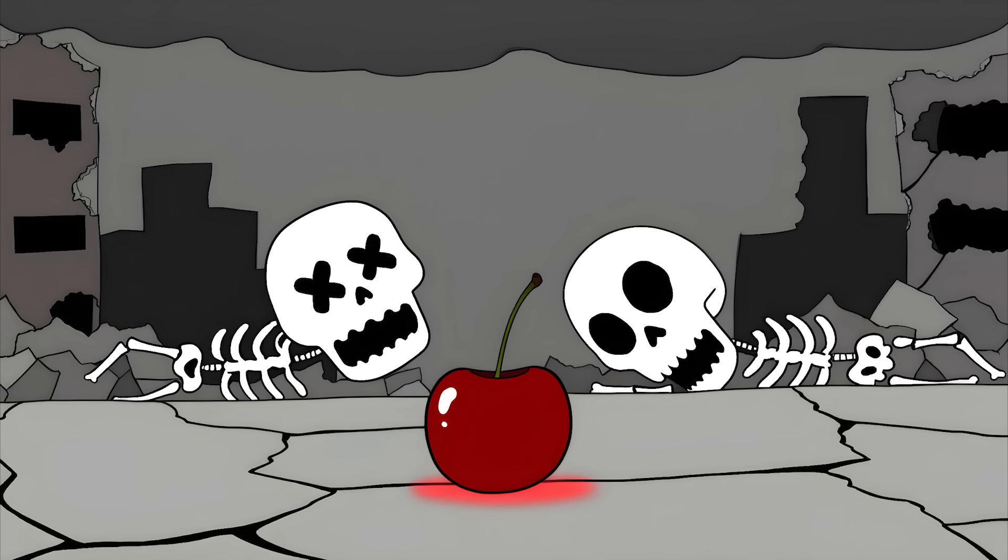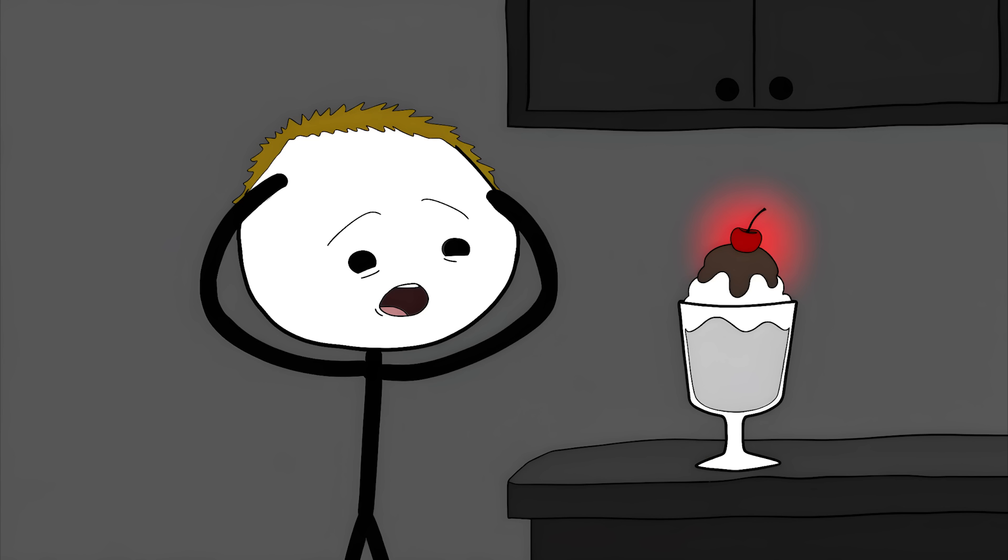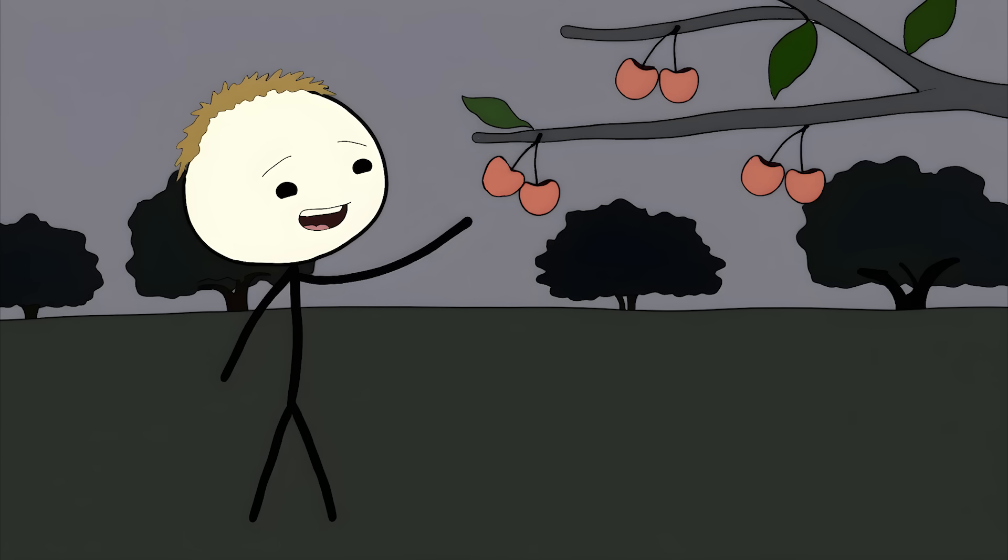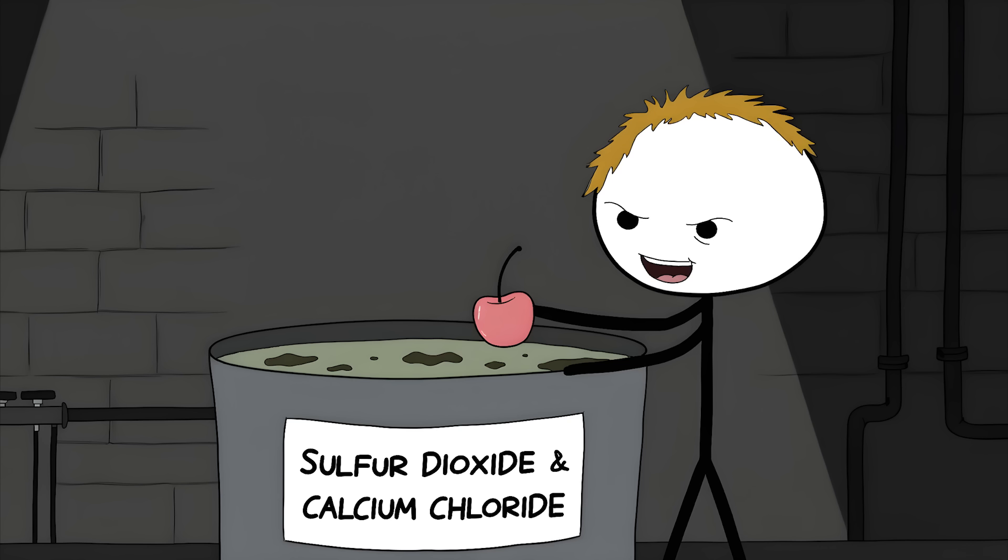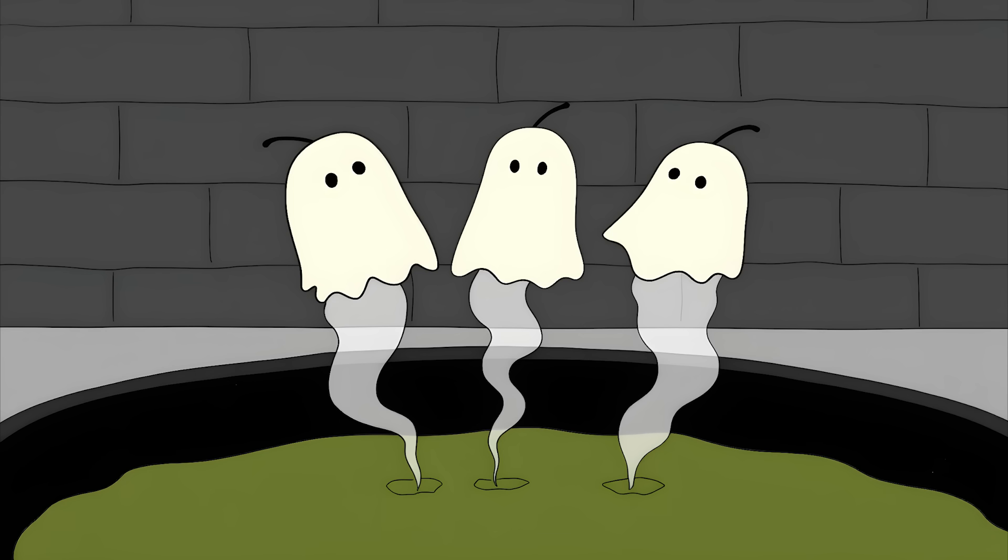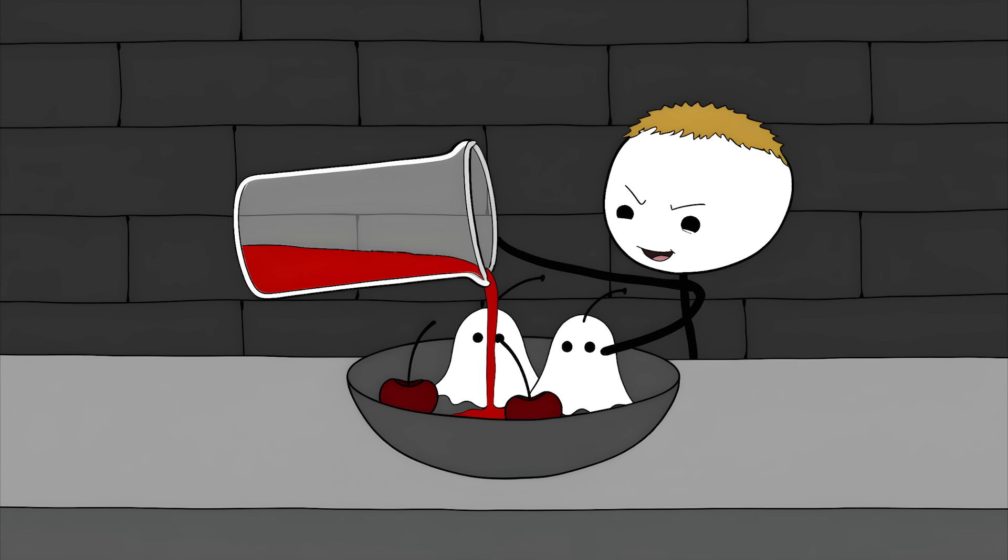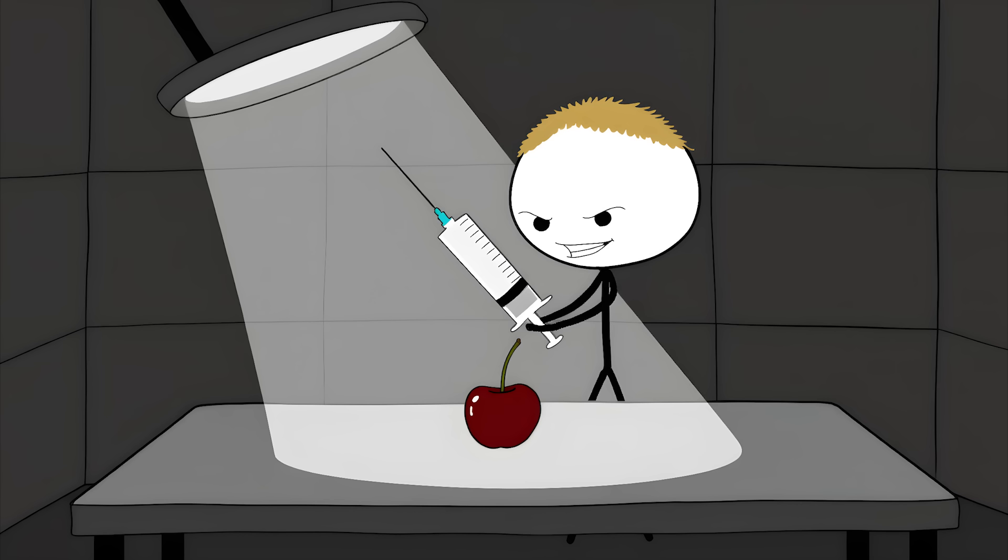8. The Immortal Zombie Cherry. Those bright red cherries sitting on top of your sundae are actually zombies. These maraschino cherries start life as normal pale cherries. Then they get stripped of their natural color and flavor in a chemical bath of sulfur dioxide and calcium chloride. This bleaches them completely white, like tiny ghost cherries. Then, these ghost cherries are soaked in corn syrup, artificial flavoring, and red dye No. 40, the same dye used in chips and candy.